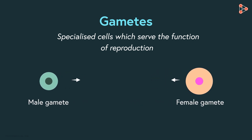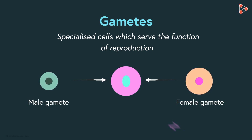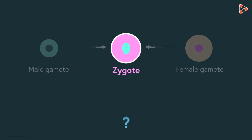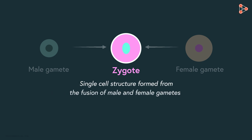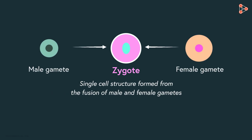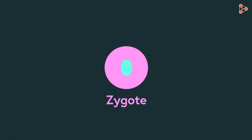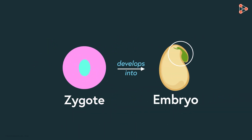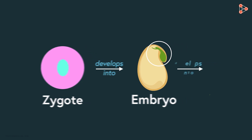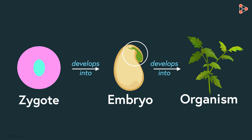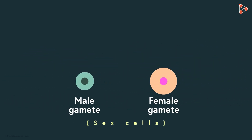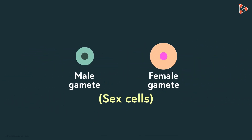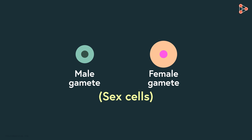Sexual reproduction is where the gametes from both male and female individuals unite to give a zygote. What is a zygote? It is a single-cell structure formed from the fusion of male and female gametes. This single cell further develops into an embryo. What's an embryo? It is the structure that will further develop into an organism. So gametes are the special sex cells present in organisms that participate in sexual reproduction.